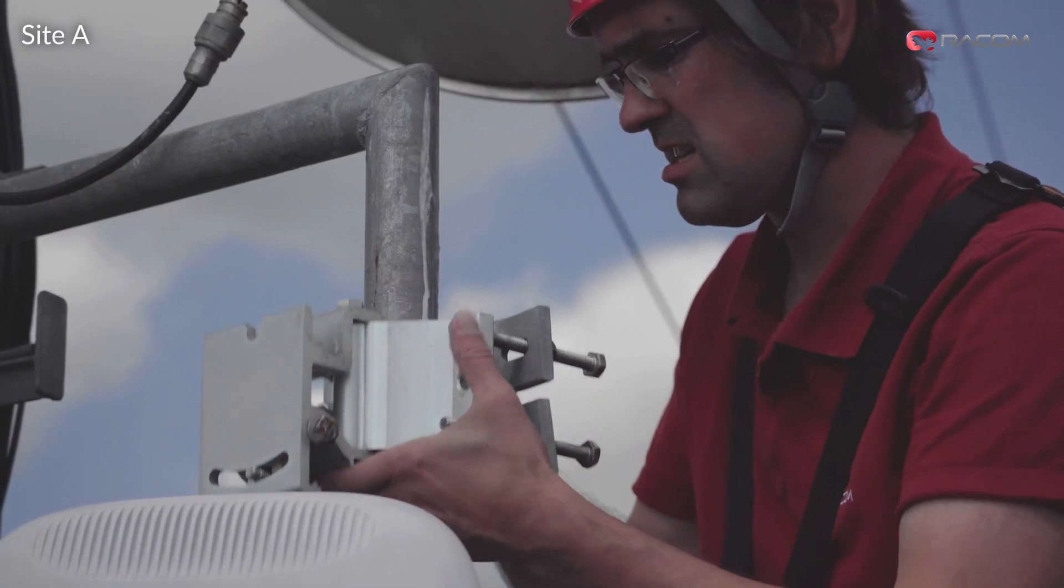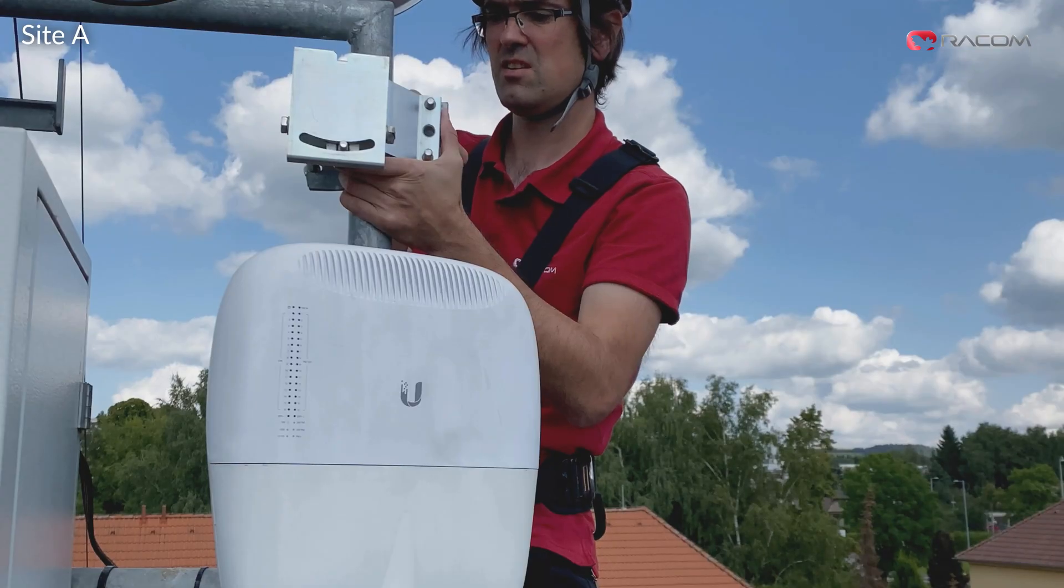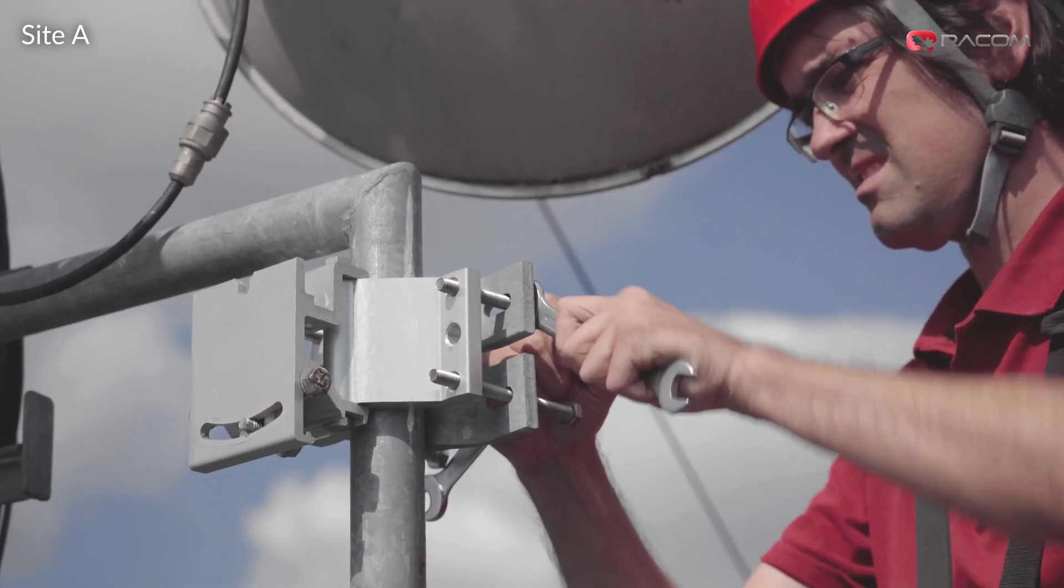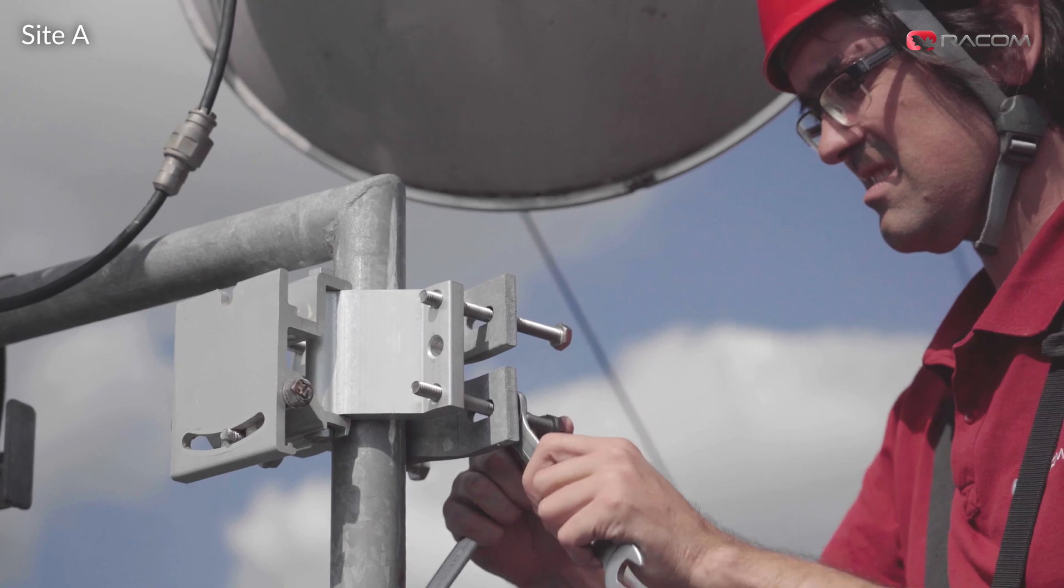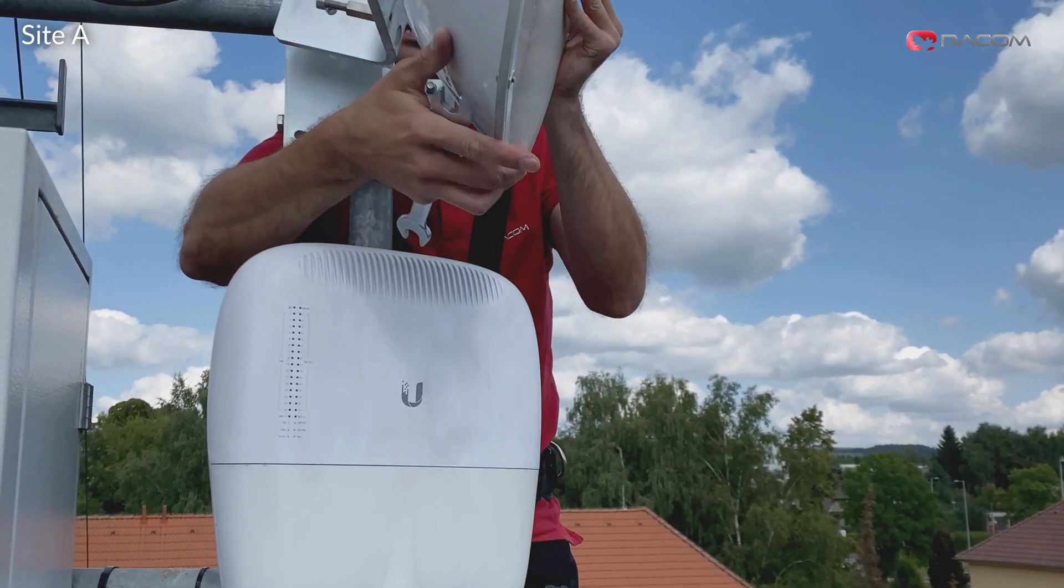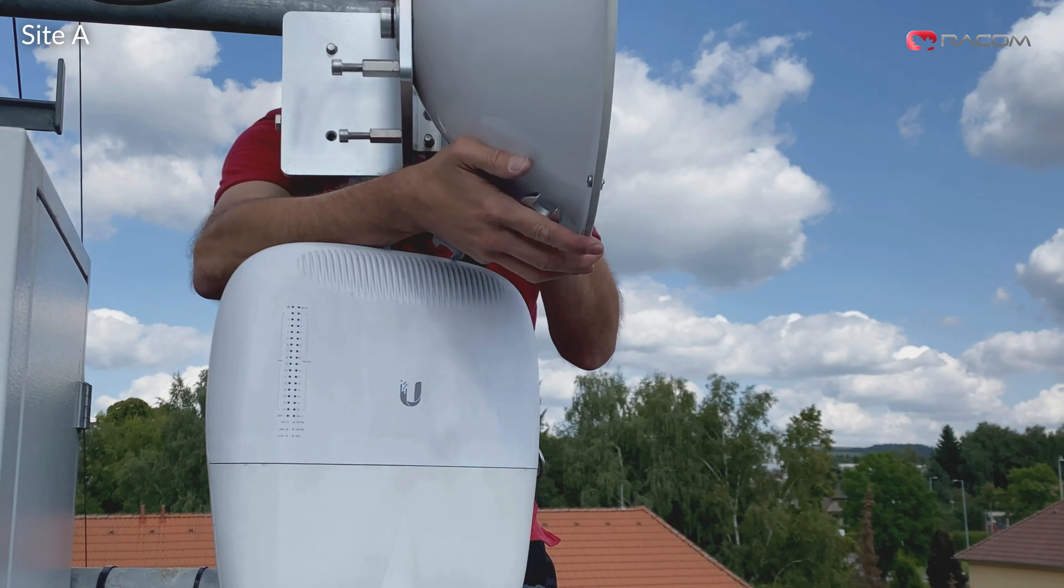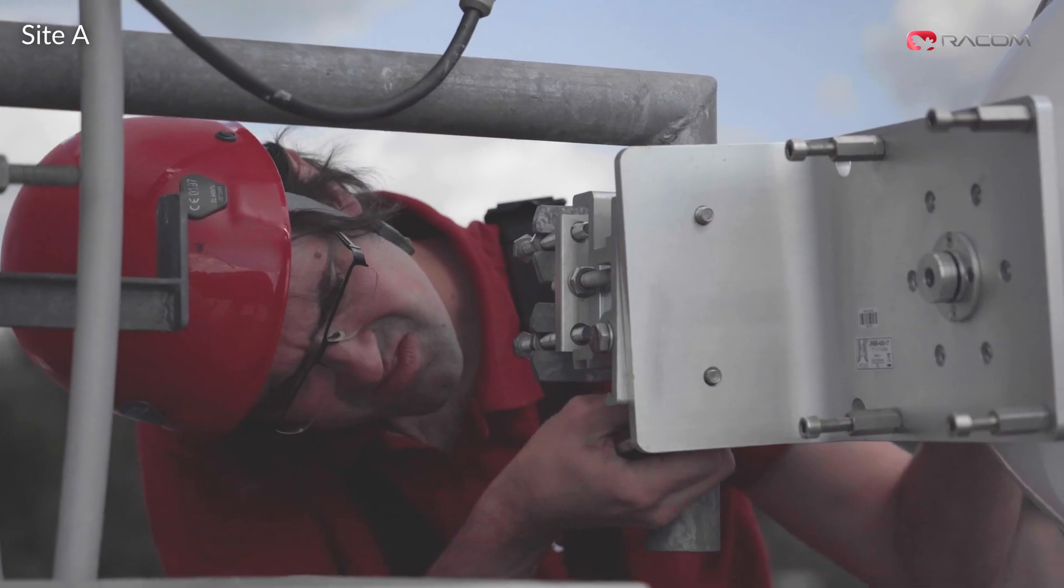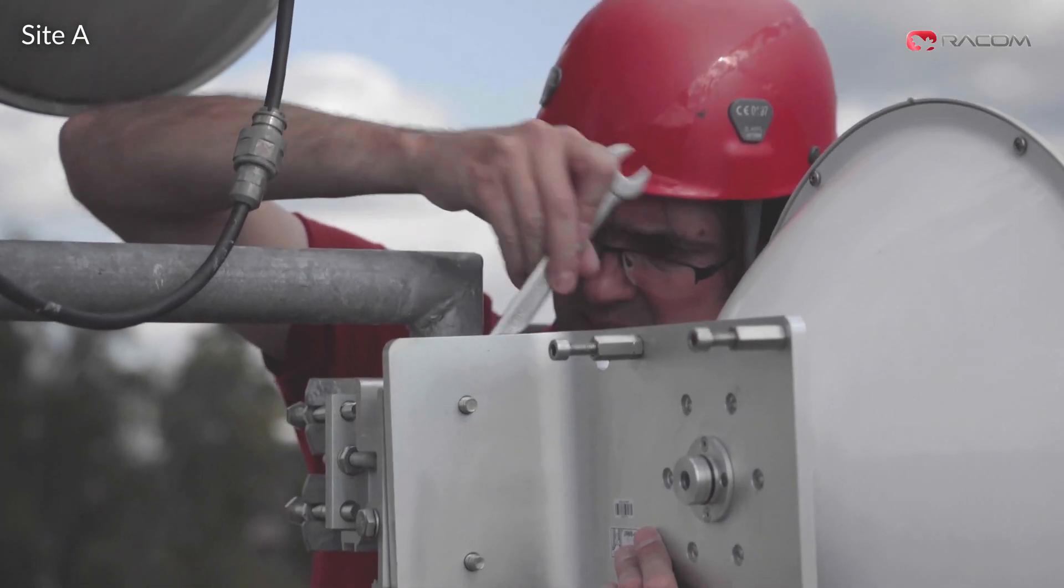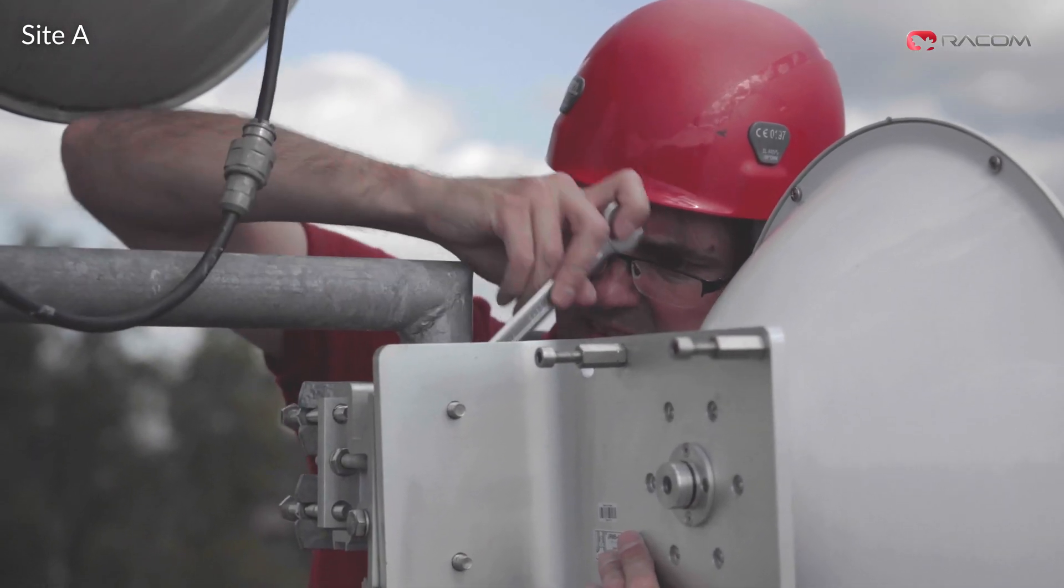Now we install the mounting bracket. On this site we are using Euros 40 cm or 1 foot antenna while on site B we have Euros 65 cm or 2 feet antenna. Installation is identical on both sides of the link and is in fact very similar to all other antenna vendors. When the bracket is secure we will install and tighten the antenna.